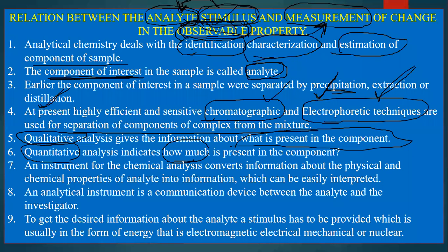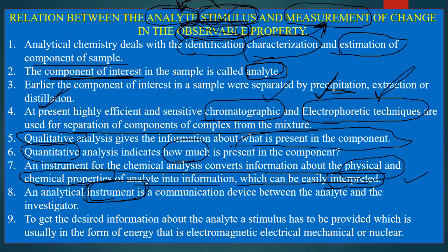An instrument for chemical analysis converts information about physical and chemical properties of the analyte. An instrument works on the basis of physical and chemical properties of the analyte and gives information that can be interpreted and analyzed. So an instrument is a communication device between you — the investigator — and the analyte. A stimulus has to be provided.